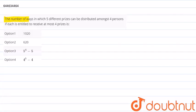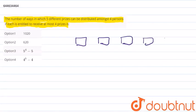The question for today is: the number of ways in which five different prizes can be distributed among four persons if each is entitled to receive at most four prizes.